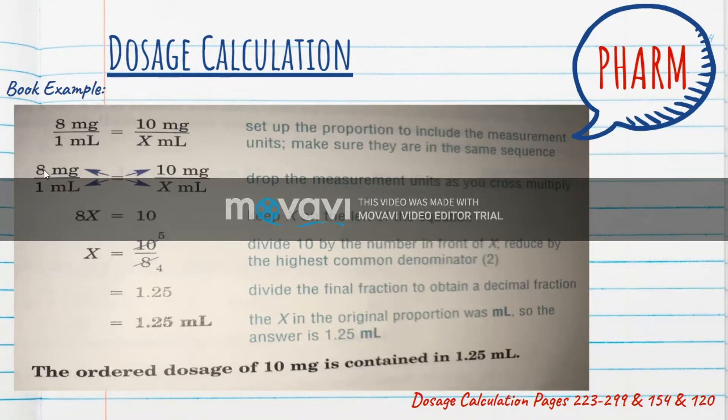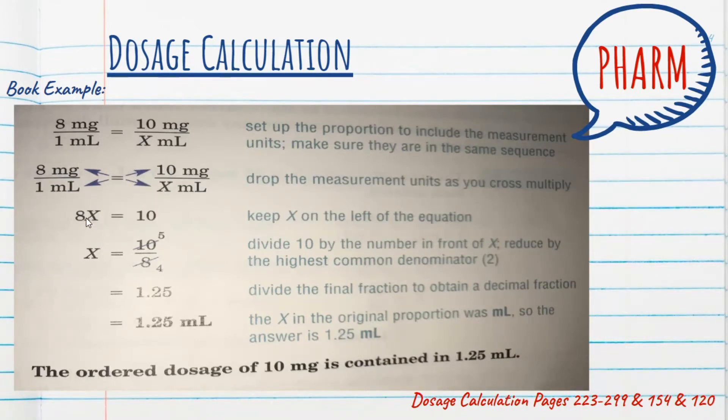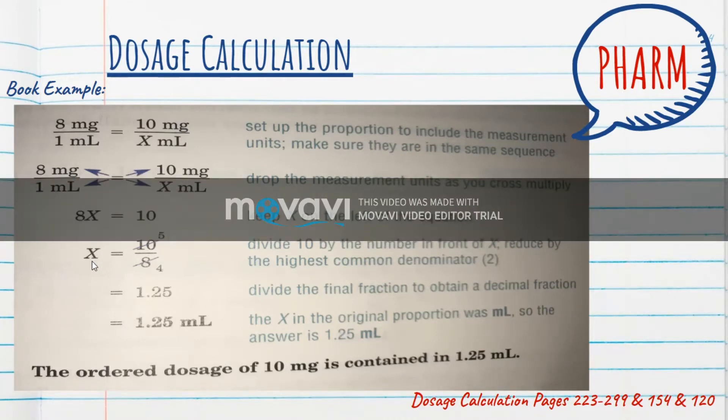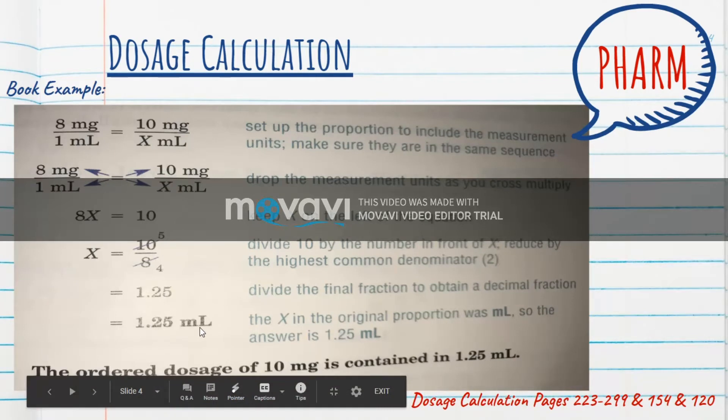When we cross multiply, the 8 and the x become combined, and the 10 comes on the other side. So in order to remove the x from the 8, we have to divide both sides by 8. So x stands alone, and 10 divided by 8 is 1.25. So our answer is 1.25 milliliters.